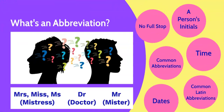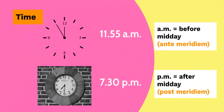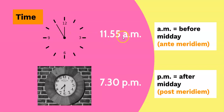We use full stops with abbreviations of time when talking about a.m. and p.m. A.m. means before midday, and it comes from the Latin ante-meridiem. P.m. means after midday, and it comes from the Latin post-meridiem. There's a space between the number and the a.m., and likewise a space between the number and the p.m.